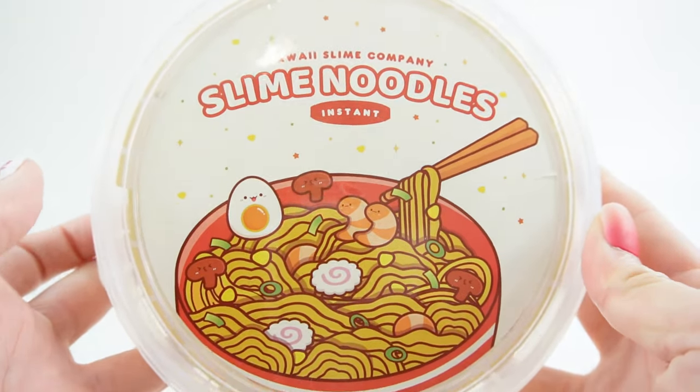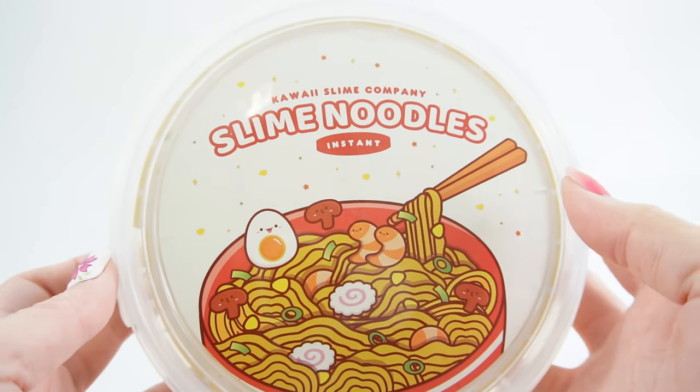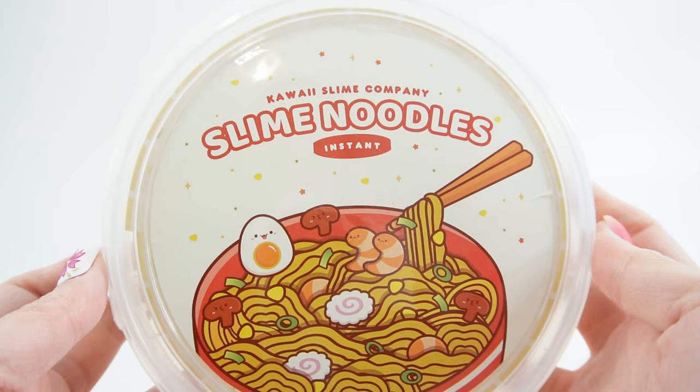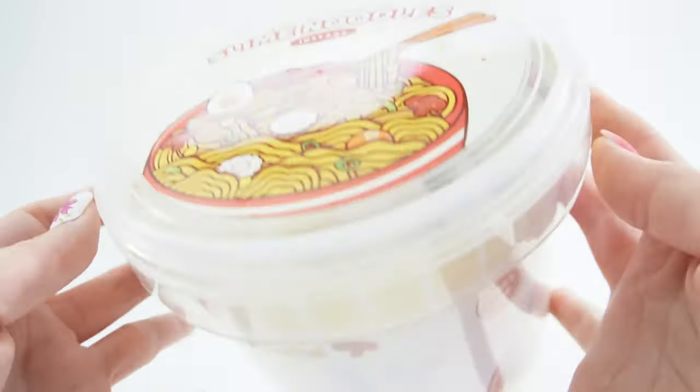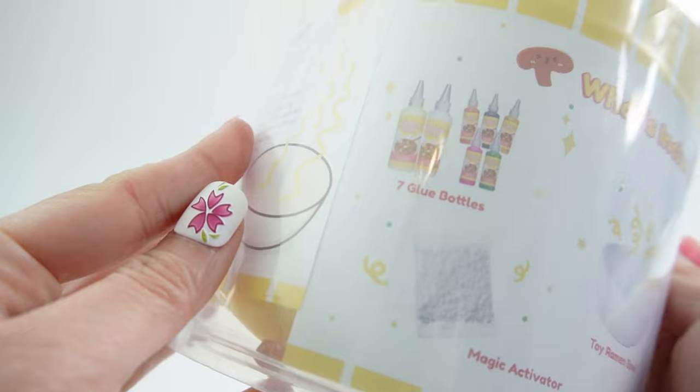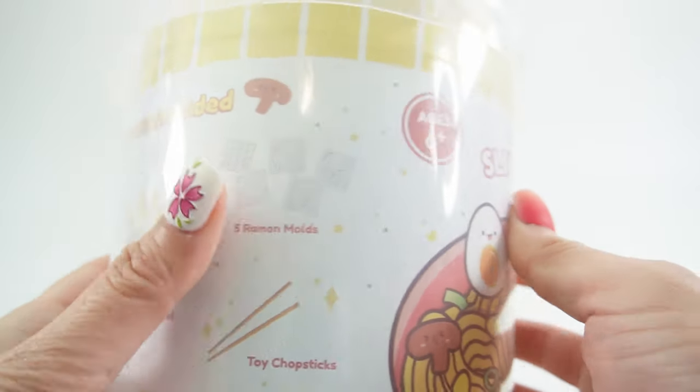Hi everyone and welcome to Poppy DIY Crafts. Today we have a DIY slime kit making some ramen noodles. I got this from the Kauai Slime Company. So if you're interested in getting this for yourself, head on over to their website. Let's go ahead and get started.